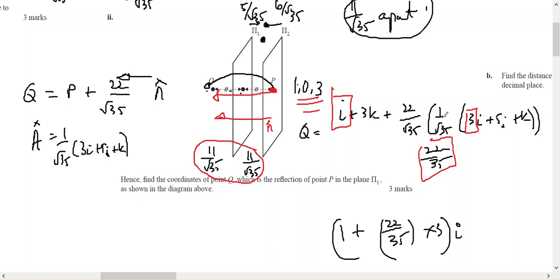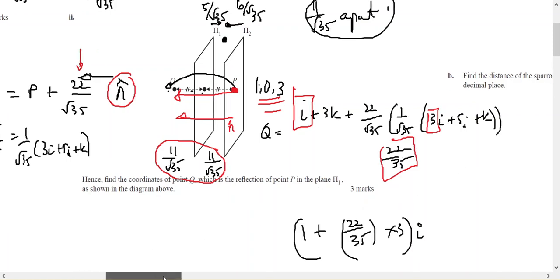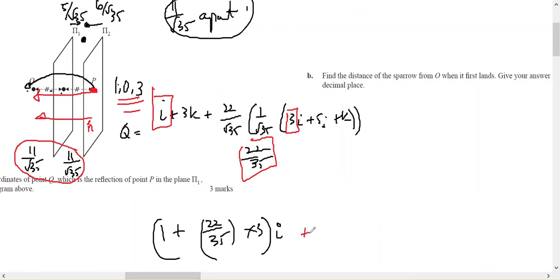And since I divide n by its magnitude, then n hat gives me the direction of n, and this tells me how far I'm moving. So each of those can be calculated. So the second one will be plus 0 plus 5 times 22 on root 35, plus 3, plus 1 times 22 on root 35.